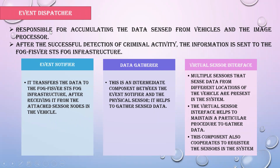The event dispatcher is responsible for collecting all data sensed by sensors for processing the image. The event notifier transfers all data to Fog FISSOR, receiving data from sensors capturing images or parameters. The data gatherer acts as an intermediary between the event notifier and virtual sensor interface, gathering and storing data. The virtual sensor interface handles multiple sensors that sense data through GPS, GSM, and other systems, maintaining a procedure to gather all sensed data.